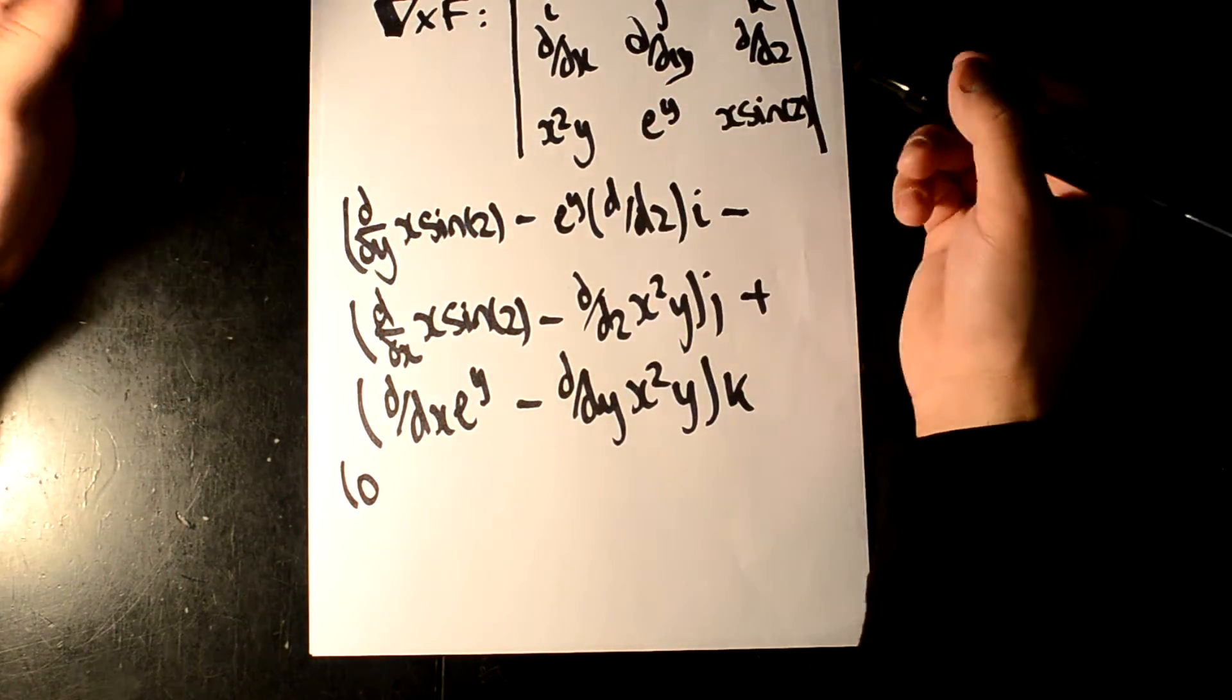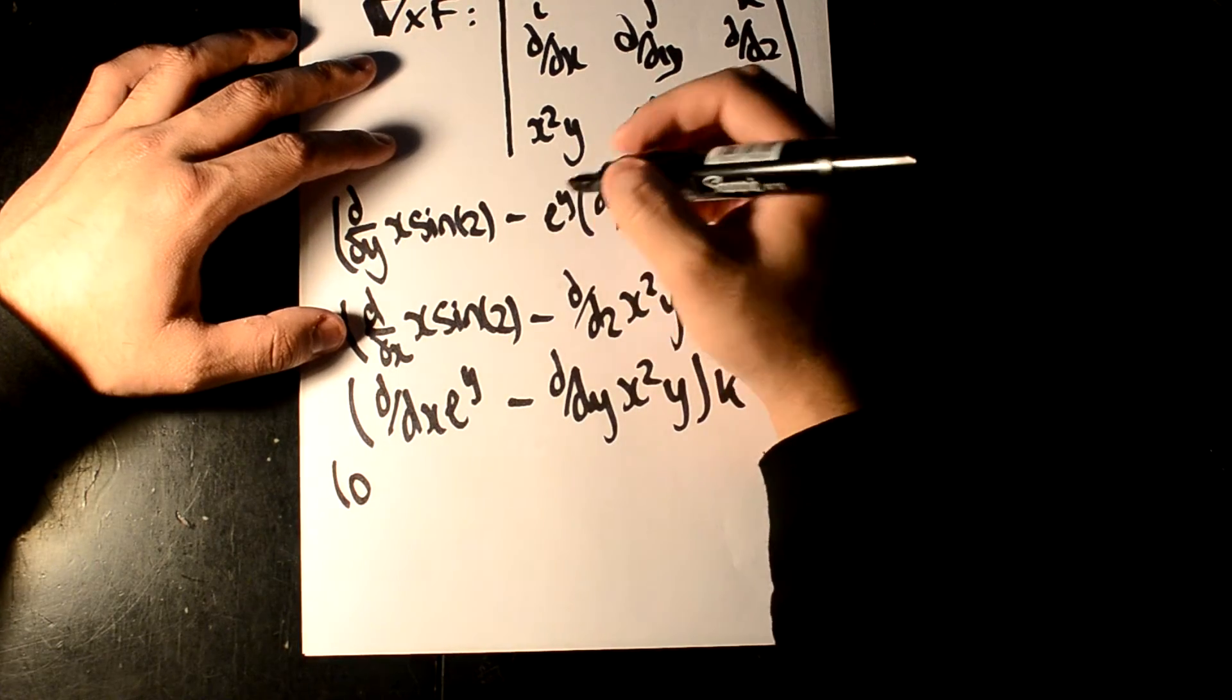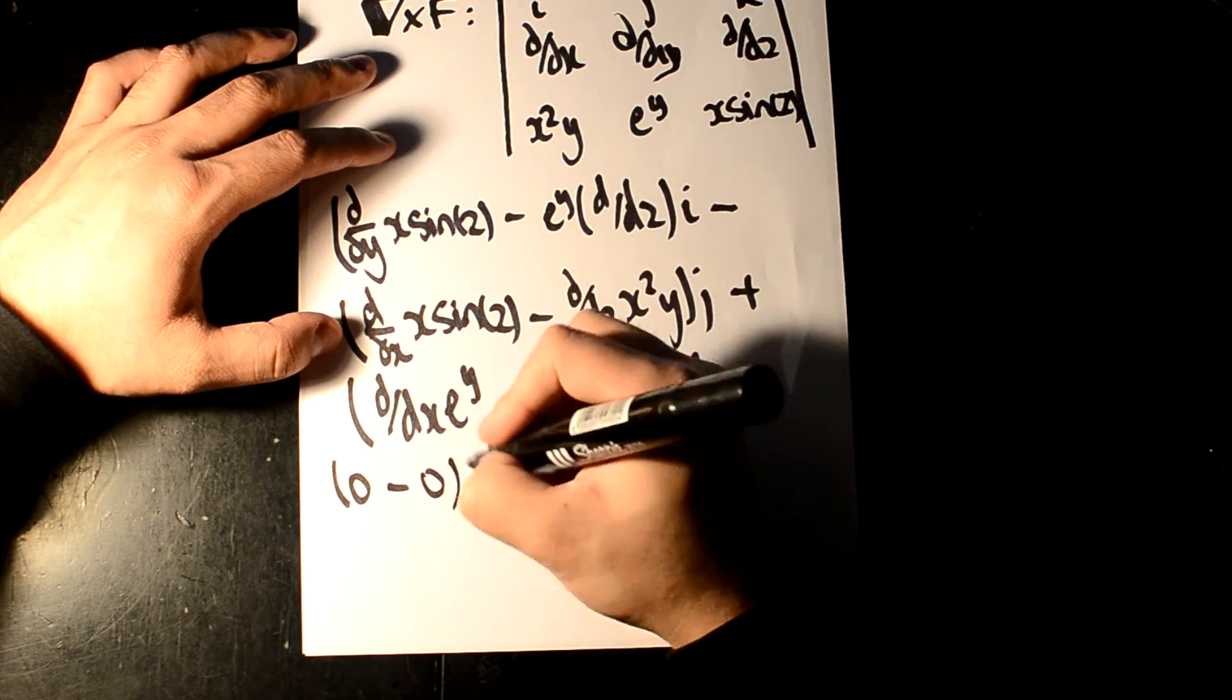Now d dz, e to the y, there are no z terms. E to the y is held constant, it differentiates into nothing. i.